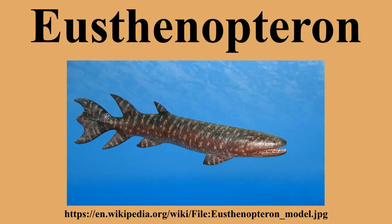Eusthenopteron, like other tetrapodomorph fishes, had internal nostrils, which are one of the defining traits of tetrapodomorphs. It also had labyrinthodont teeth, characterized by infolded enamel, which characterizes all of the earliest known tetrapods as well.